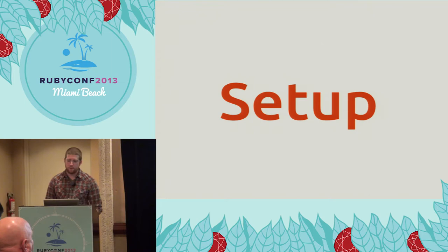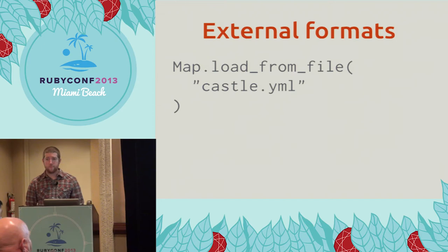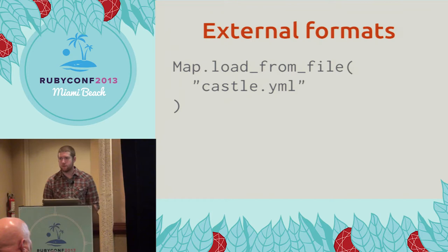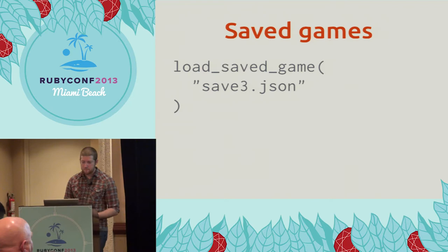So the setup is where you get the game ready to go. While you're prototyping, you'll probably just hard code some Ruby and construct some classes directly and assign them to instance variables. But as your game grows and you have different levels or different maps, you'll probably want to load your setup code from some sort of external file format where you've declared what items and enemies to place in the game and what the map layout looks like. And once you let your players save their games, you'll need to serialize the game out and then load it back up later. These are all different forms of setup.